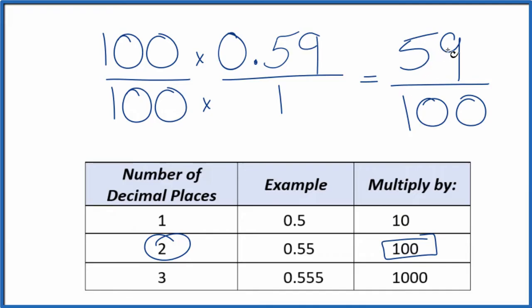If you divide 59 by 100, you're going to end up with 0.59.